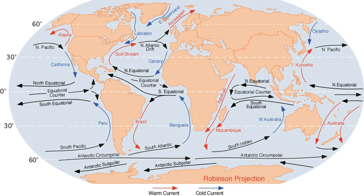Surface oceanic currents are sometimes wind-driven and develop their typical clockwise spirals in the northern hemisphere and counter-clockwise rotation in the southern hemisphere due to imposed wind stresses. In these wind-driven currents, the Ekman spiral effect results in the currents flowing at an angle to the driving winds. In addition, the areas of surface ocean currents move somewhat with the seasons; this is most notable in equatorial currents.